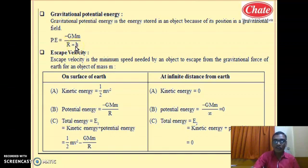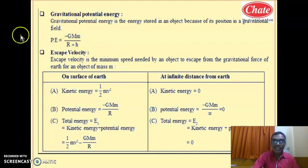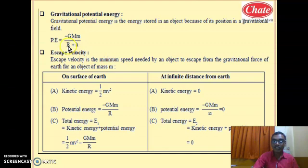In the Sun-Earth case, M is the mass of the Sun and m is the mass of the Earth. This is the formula of gravitational potential energy at height h: −GMm/(r + h). On the surface, where height h = 0, the gravitational potential energy is −GMm/r. This is the concept of gravitational potential energy; remember this formula and definition.